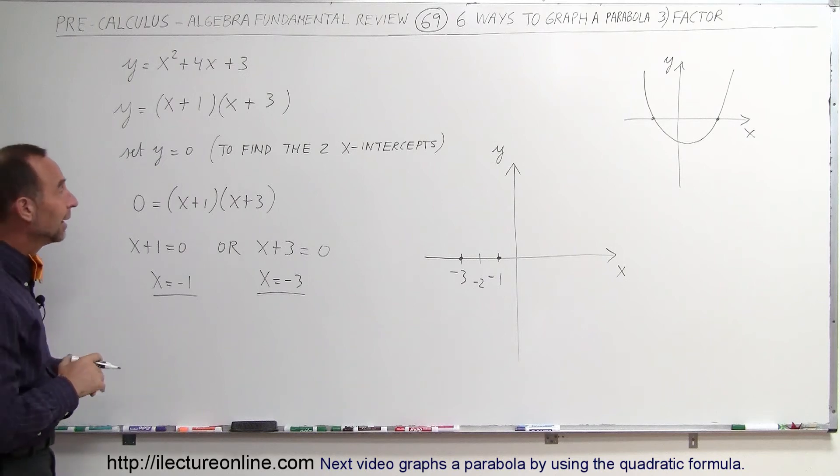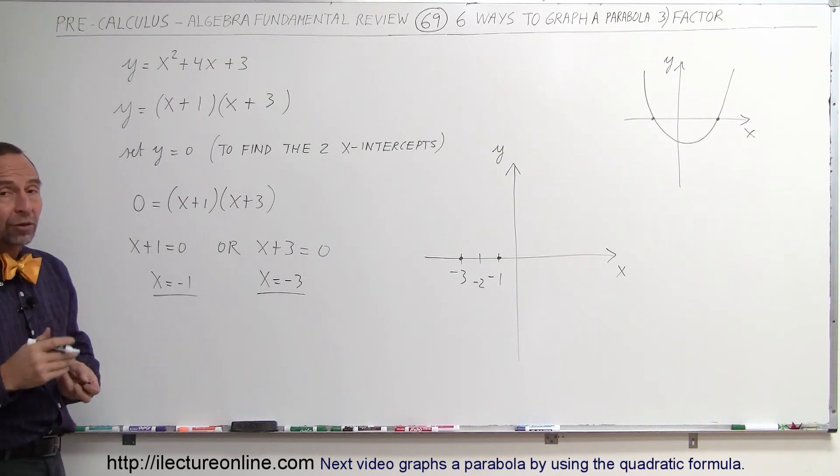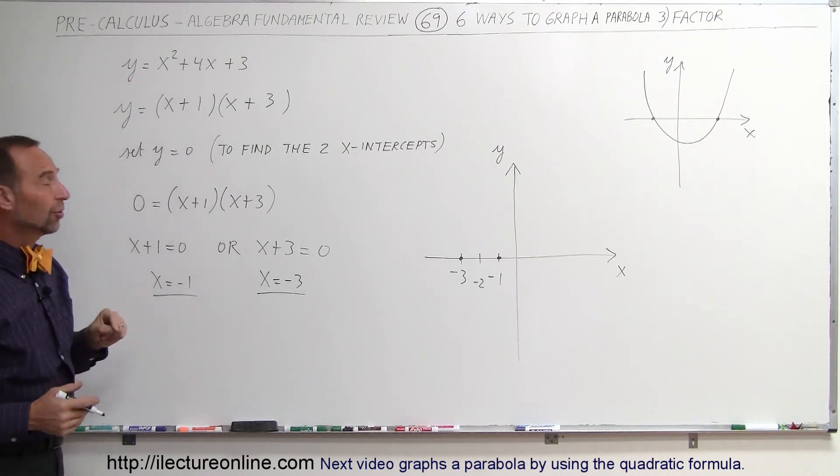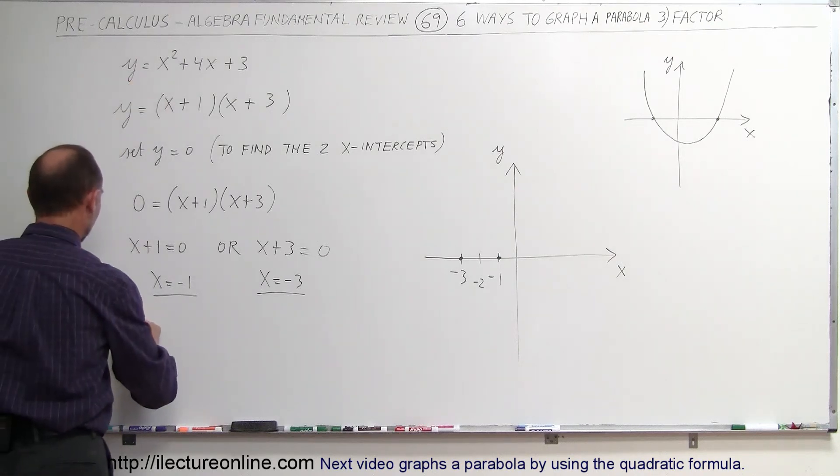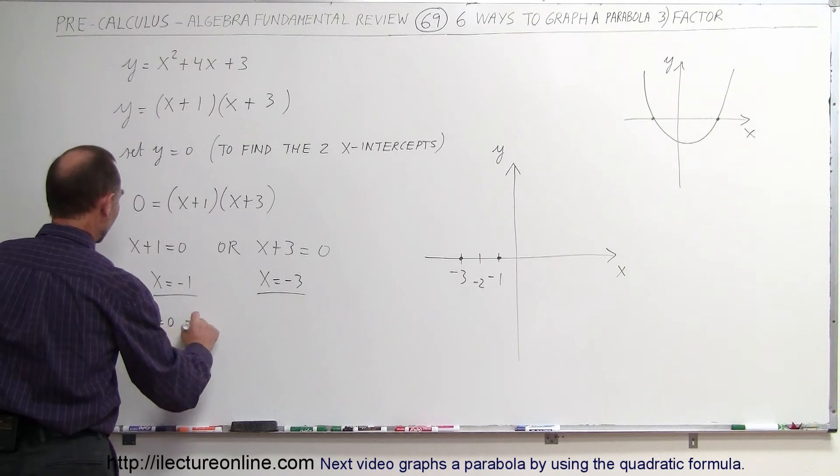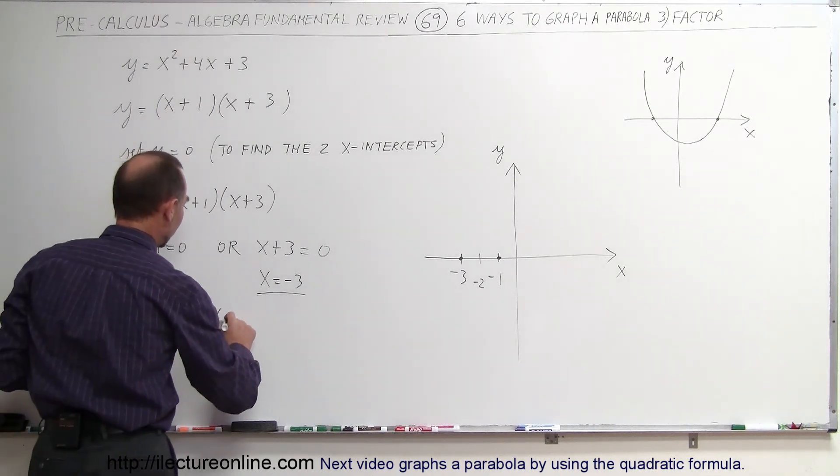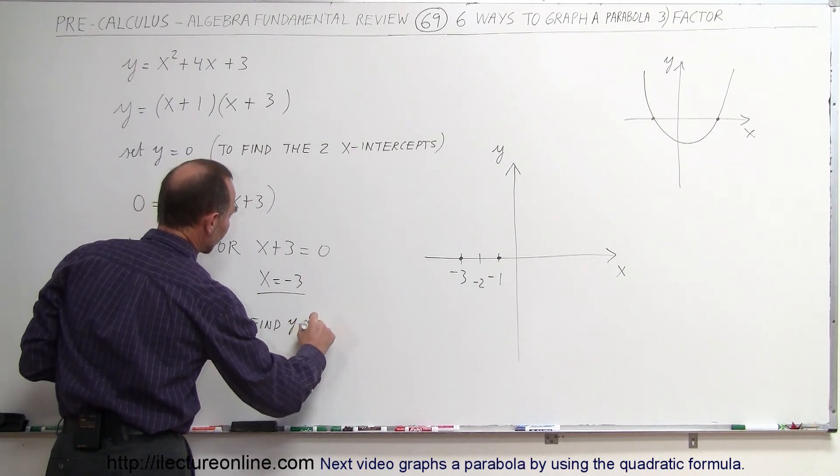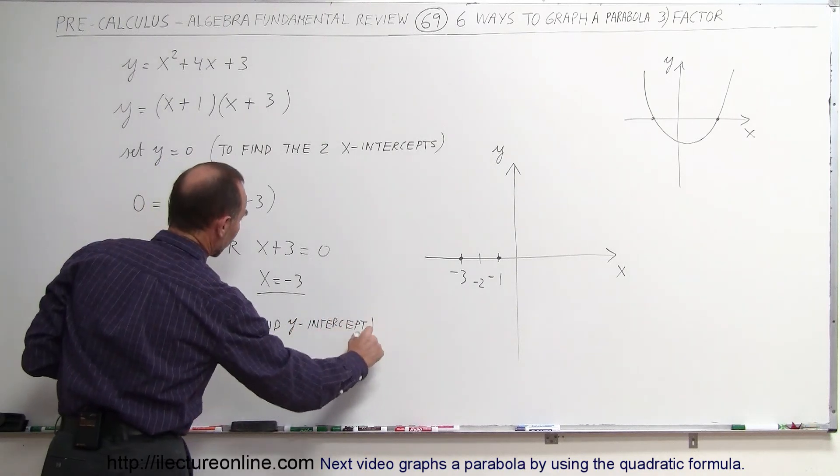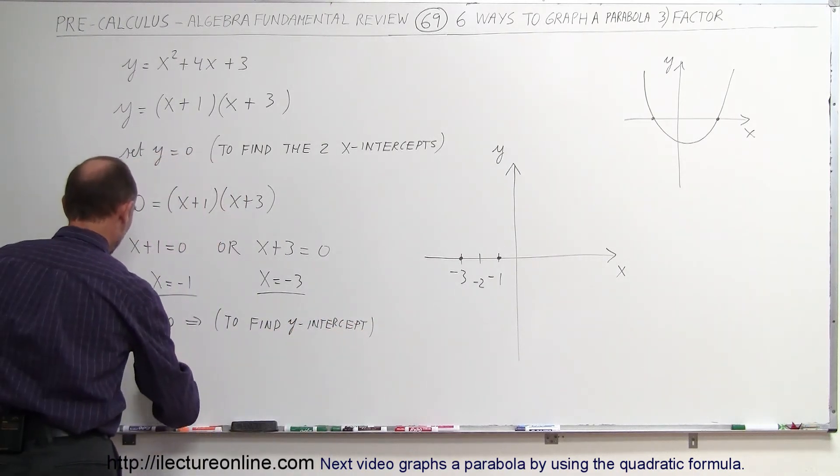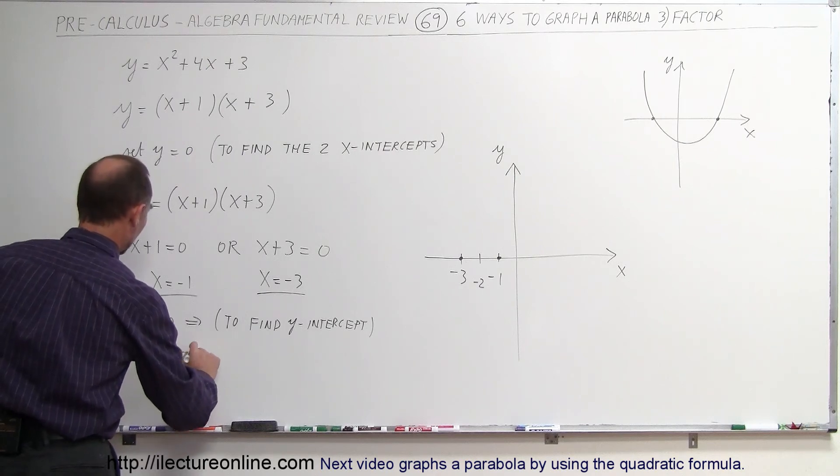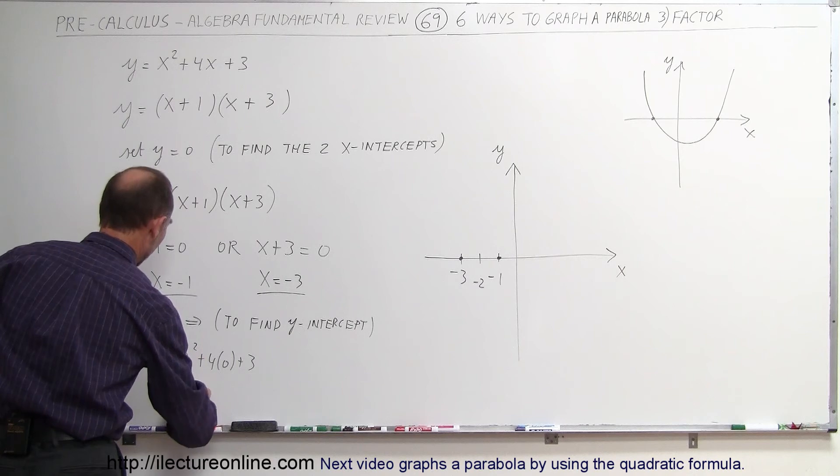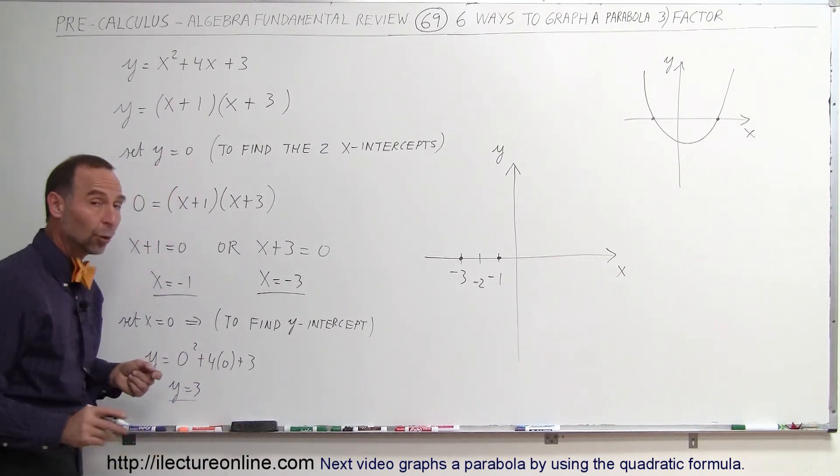So that gives already a pretty good idea of how to graph it. We may want to do one more thing. In any case, we may want to know where it crosses the y-axis. To find out where it crosses the y-axis, we want to set x equal to zero. So we're going to set x equal to zero to find the y-intercept. So let's do that. So y is equal to zero squared plus four times zero plus three, which means y equals three, and that is then the y-intercept.